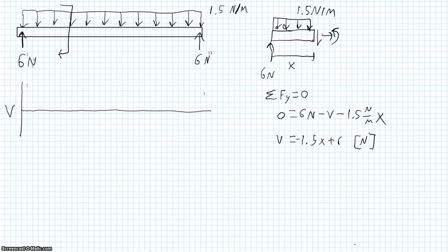So let's plot that. We start with our discontinuity. If we look at our boundary condition on the left hand side, we start up here at 6 newtons. Our shear has a negative slope, so it decreases linearly, 0 at the midpoint of the beam, and then jumps back up 6 newtons at the end of the beam.